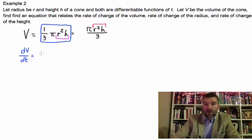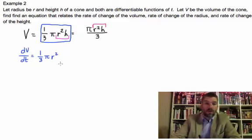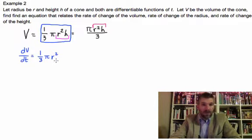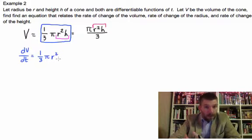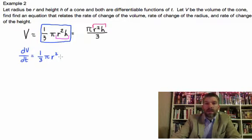It's the first one-third pi r squared h. So one-third pi r squared times the derivative of the second, which is one-third pi r squared times the derivative of the h, which is one.